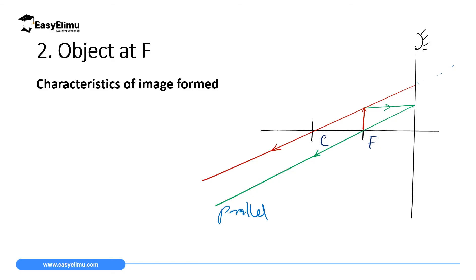So the image formed is at infinity. Remember, when rays came from infinity they formed an image at F; now when the object is at F, the image forms at infinity. An image at infinity cannot be seen or described — it is very far away. Therefore, the characteristic of the image in this case is simply: infinity, with no further description possible.